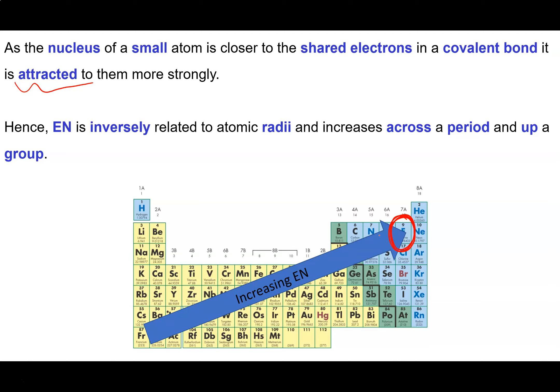So our smallest atoms are up here. So fluorine has our greatest electronegativity and our biggest atoms are down here. So francium has our least electronegativity. So electronegativity is inversely proportional to atomic radii. As radii goes up, electronegativity goes down.